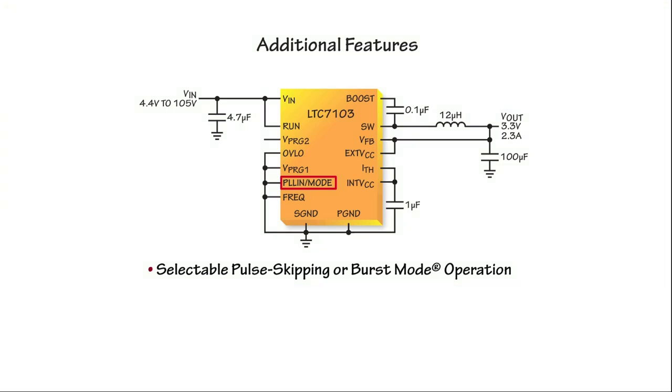The LTC7103 also features eight pin-selectable fixed output voltages that include the commonly used voltage rails between 1.2V and 15V. These pre-programmed output voltages save board space while reducing the no-load operating current.